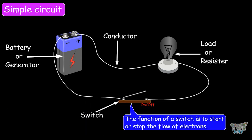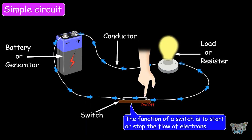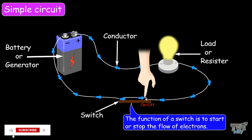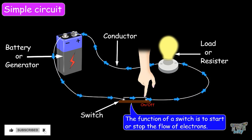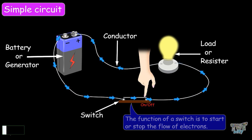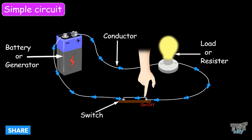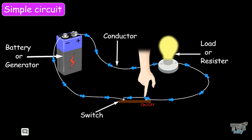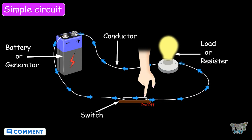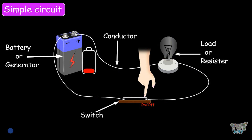The function of a switch is to start or stop the flow of electrons. When the switch is closed or on, the circuit is complete and the current starts flowing through the closed circuit. Thus a closed circuit is a circuit with no gaps in it. The circuit connected to a dead battery may not perform any work, but is still considered a closed circuit.